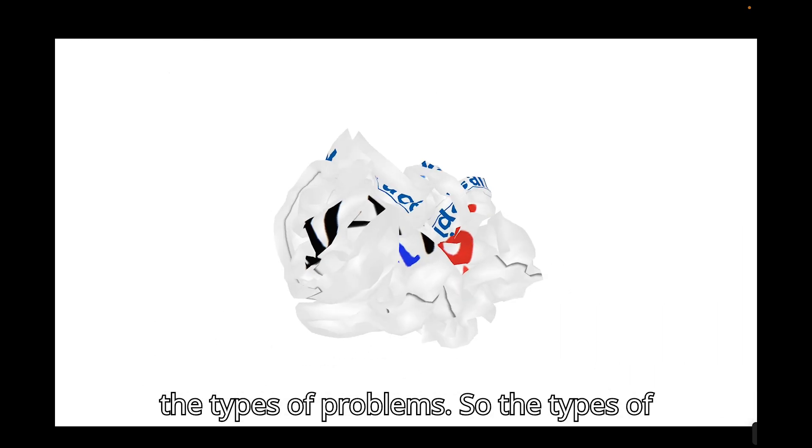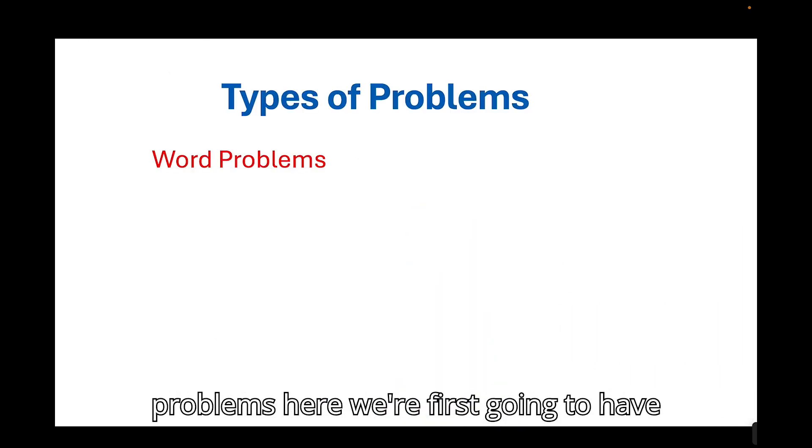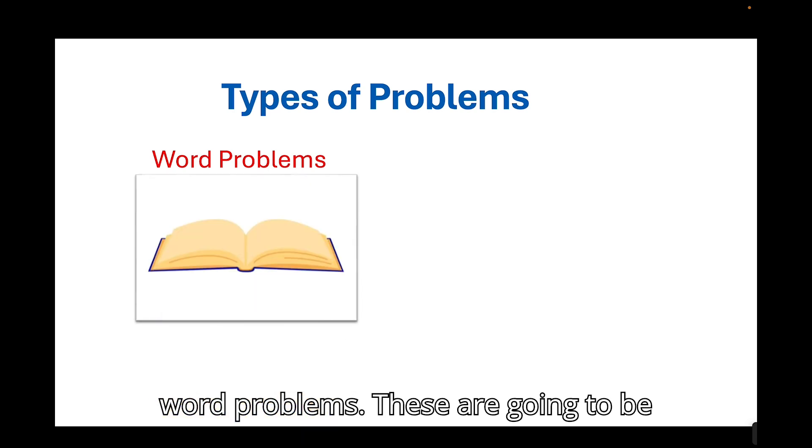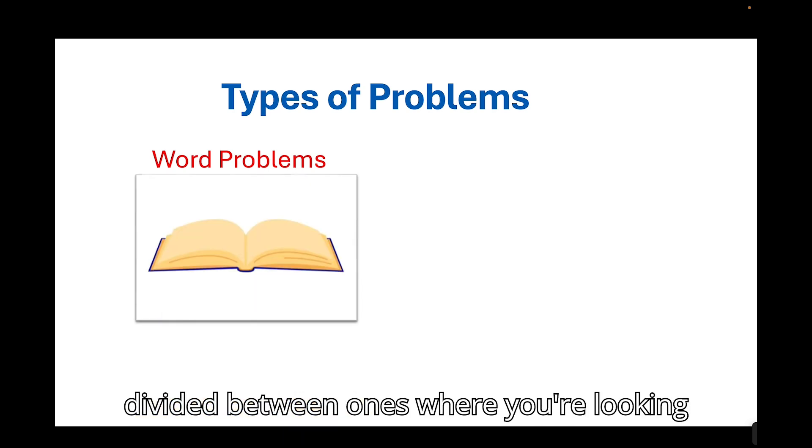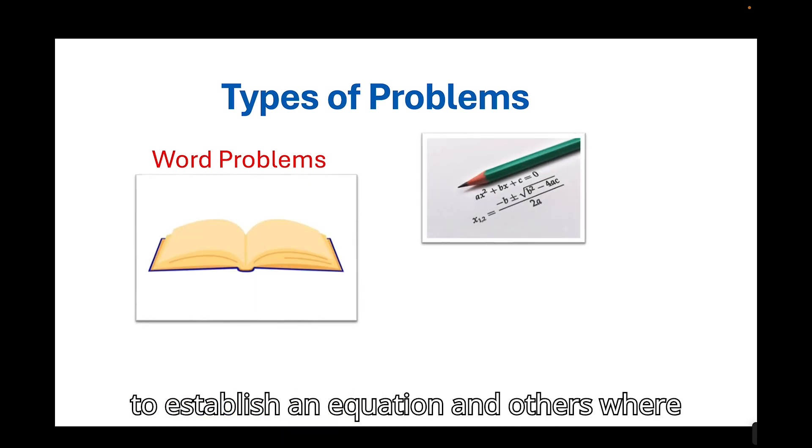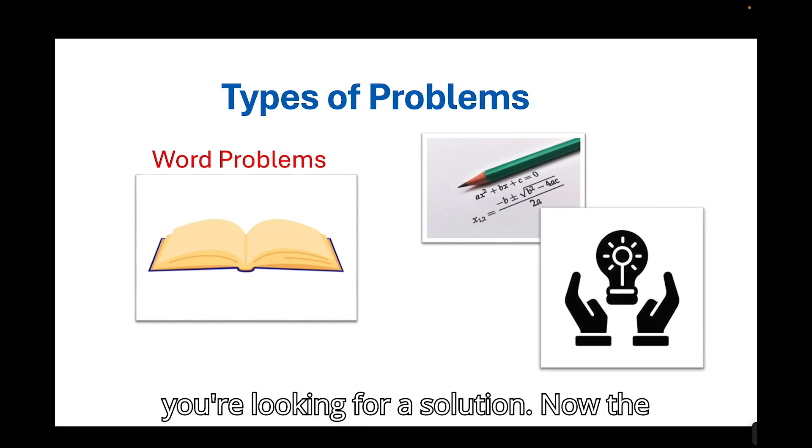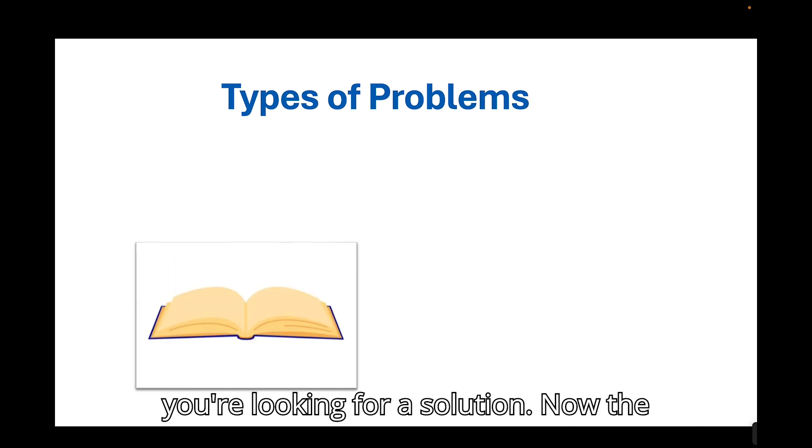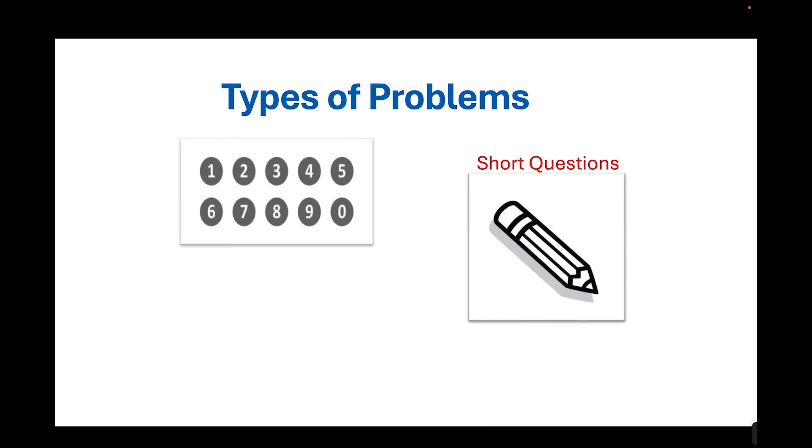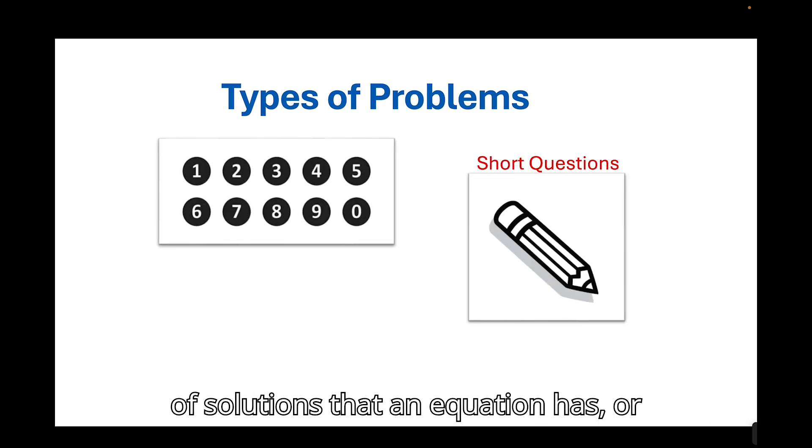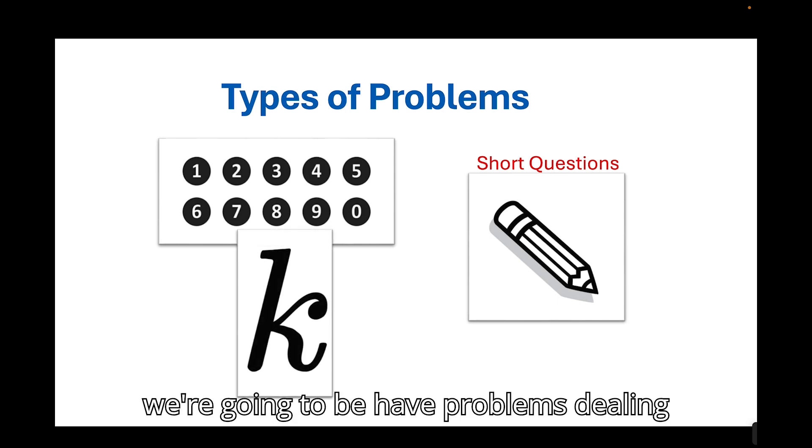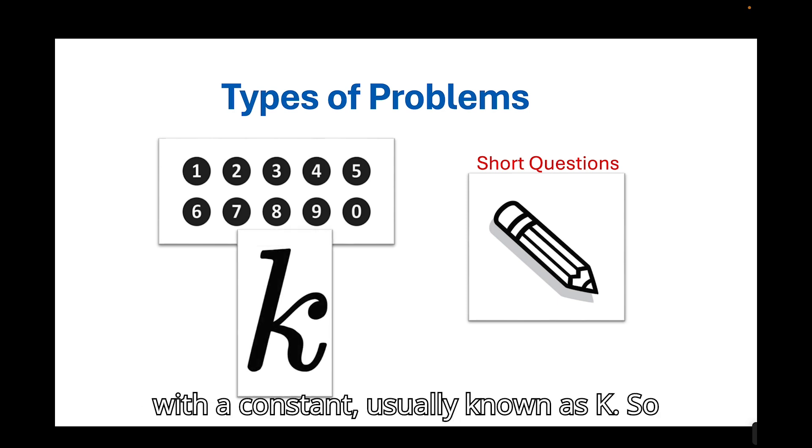Now let's move on to the types of problems. So the types of problems here, we're first going to have word problems. These are going to be divided between ones where you're looking to establish an equation and others where you're looking for a solution. Now, the next one is our short questions. We're going to either be finding a number of solutions that an equation has, or we're going to have problems dealing with a constant, usually known as k. So now let's get into the problems.